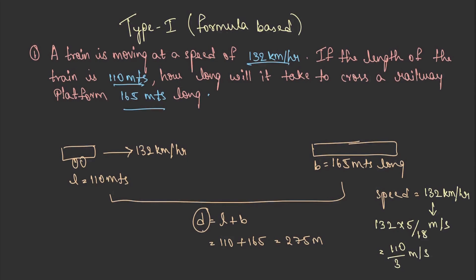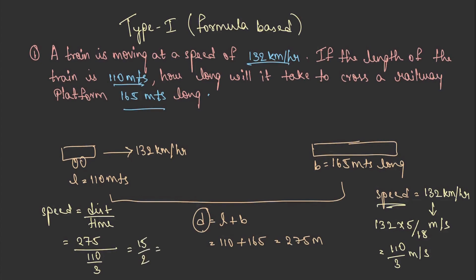We have the distance and the speed. Using speed = distance / time, time equals 275 divided by 110/3, which gives 15/2, that is 7½ seconds. So we have got the time.